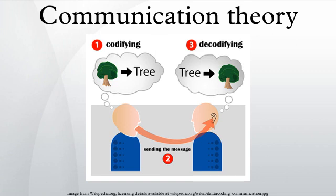Limited information-theoretic ideas had been developed at Bell Labs, all implicitly assuming events of equal probability. Harry Nyquist's 1924 paper, 'Certain Factors Affecting Telegraph Speed,' contains a theoretical section quantifying intelligence and the line speed at which it can be transmitted by a communication system.